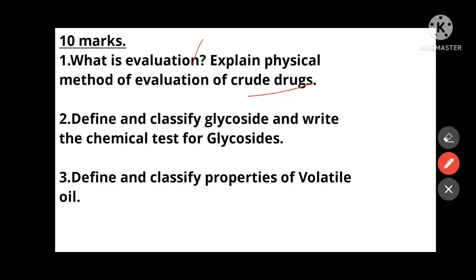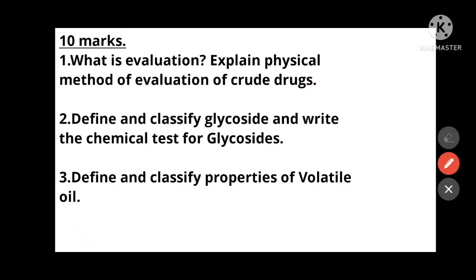Next: Define and classify glycosides and write the chemical test for glycosides. First define glycosides, classify them, and write the chemical test. Then: Define and classify properties of volatile oils — define volatile oil, classify it, then write the properties.